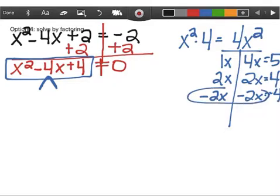These are the factors that I'm choosing, negative 2x, negative 2x. Bring down the plus 4 and bring down the x squared and now I can group it.